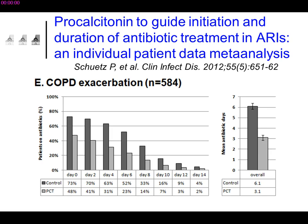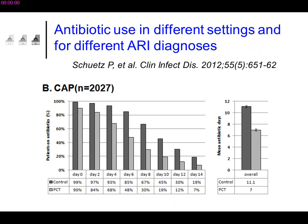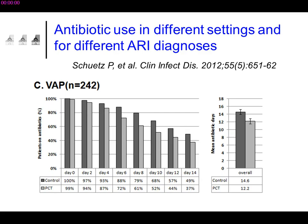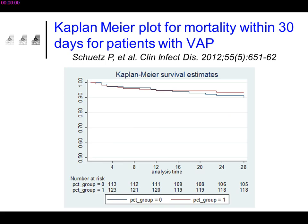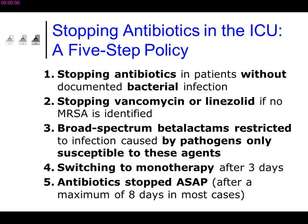There are also randomized trials showing that in exacerbated COPD and community-acquired pneumonia and ventilator-acquired pneumonia, it is possible to reduce the duration of antibiotic courses — safely, without any impact on morbidity or mortality. It is possible to stop antibiotic treatment with or without procalcitonin, provided you monitor all that and have an antibiotic therapy policy in your ICU.